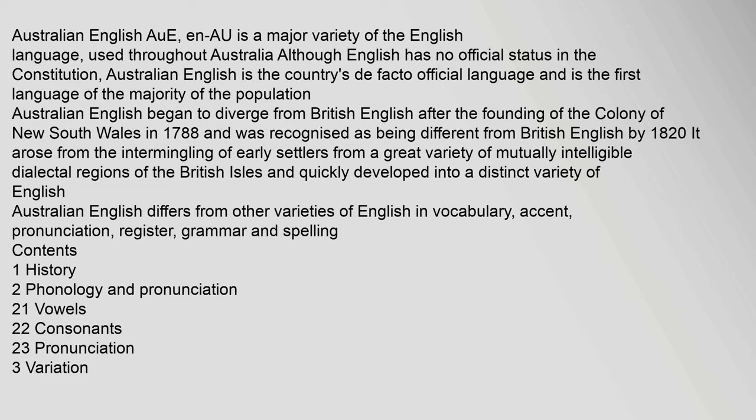Australian English began to diverge from British English after the founding of the colony of New South Wales in 1788, and was recognised as being different from British English by 1820. It arose from the intermingling of early settlers from a great variety of mutually intelligible dialectal regions of the British Isles, and quickly developed into a distinct variety of English.